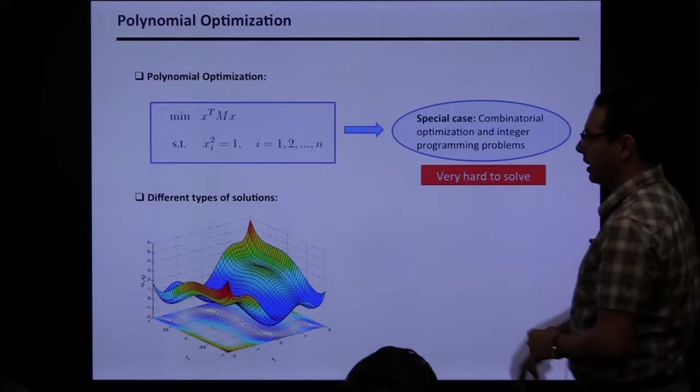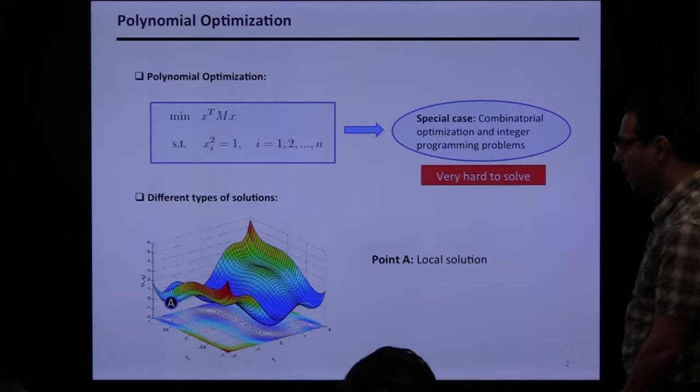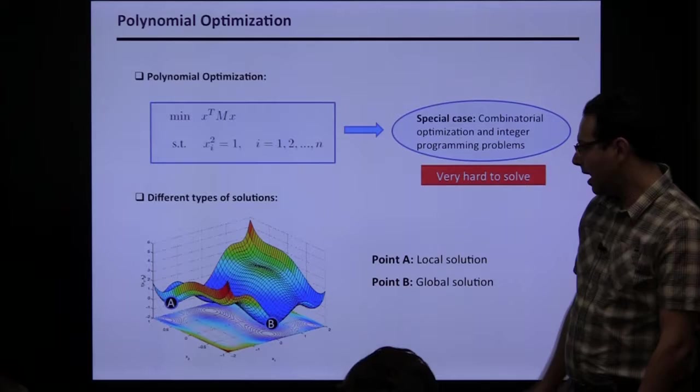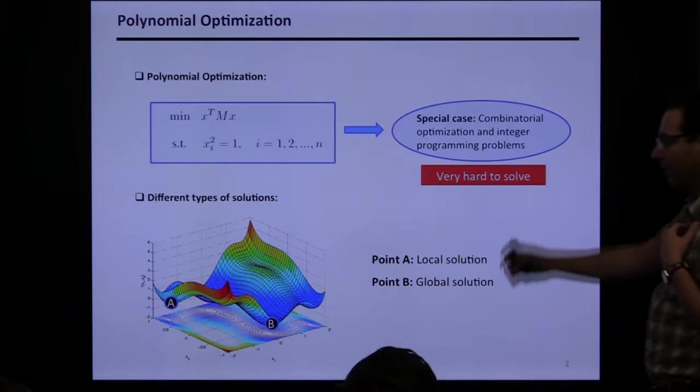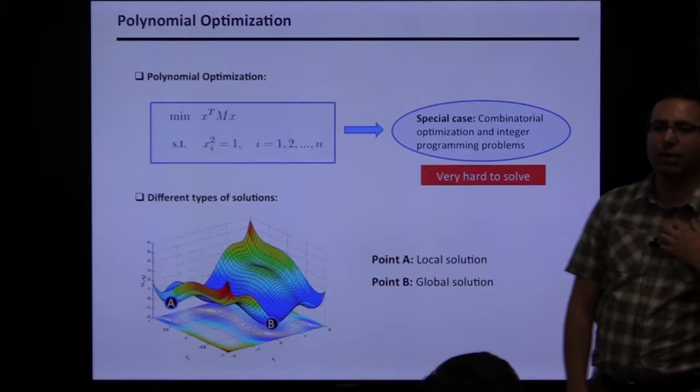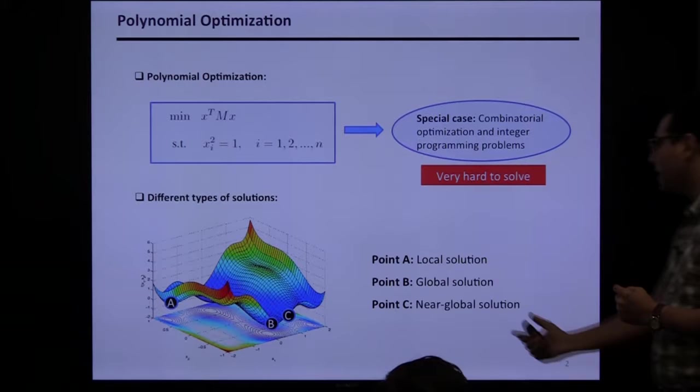Once we deal with an optimization problem there are different types of solutions. If I have a surface and I'm looking for a solution to minimize some objective, I can look for a local minimum — a solution that is locally the best — or a global minimum, the lowest value possible. Finding a local solution is easy; that's what we've been doing for centuries. Any descent algorithm ends up with a local solution, but finding a global solution is a big challenge — that's about NP-completeness.